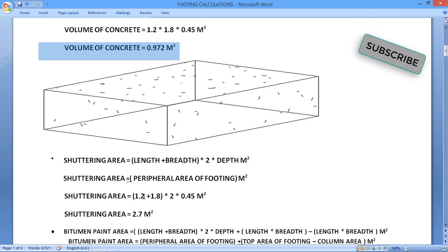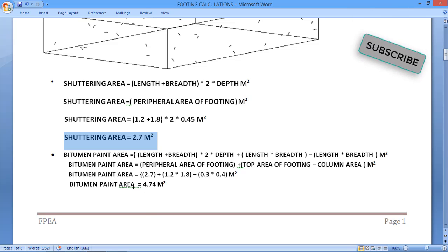Now the shuttering area equals 1.2 plus 1.8 times 2 times 0.45 square meter. So the shuttering area value we are getting is 2.7 square meter.